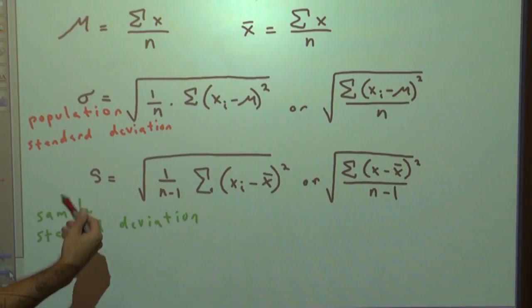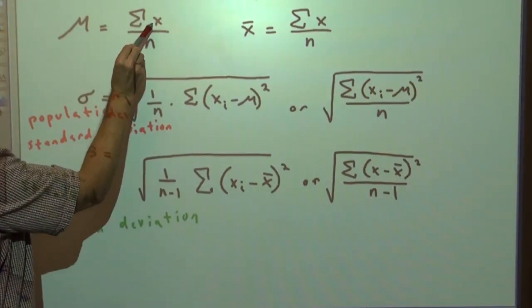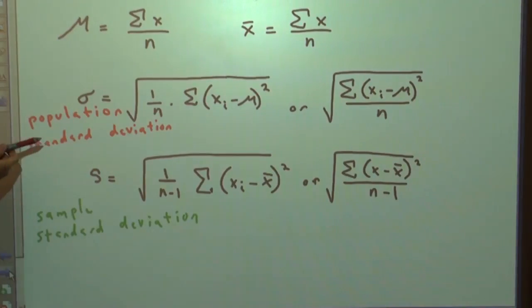All right, now, if you have a mean, whether it's a population mean or a sample mean, the formula is the same. Add up all the scores, divide by n, the sample size. But here's where it gets different.